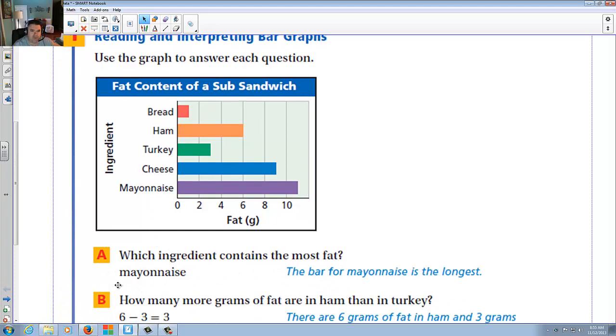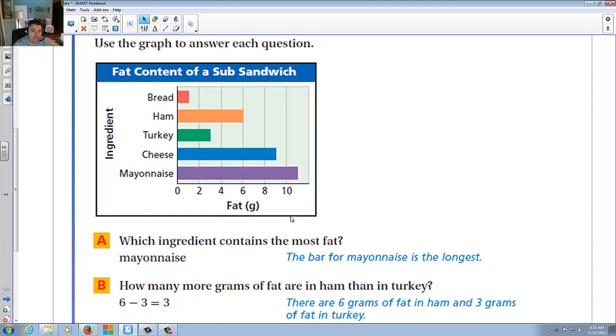Which ingredient contains the most fat? This is mayonnaise, because clearly mayonnaise is about 11 grams of fat. How many more fat grams are in ham than turkey? Well, ham has six, and turkey has three, so six minus three is three.